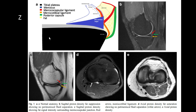This illustration from a recent Skeletal Radiology article shows the posterior horn of the medial meniscus. You can see the meniscocapsular ligament inserting a little bit down, creating this ramp. Then we have the meniscotibial ligament and parts of the posterior joint capsule, and in between there seems to be fatty tissue.